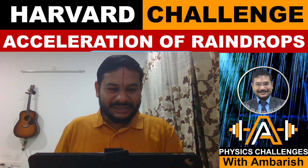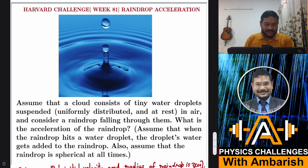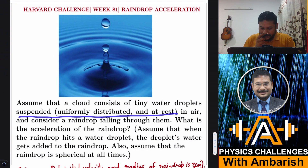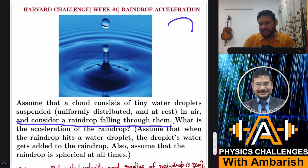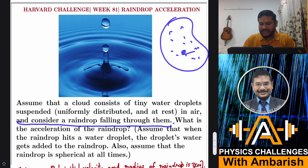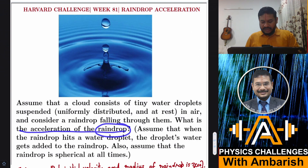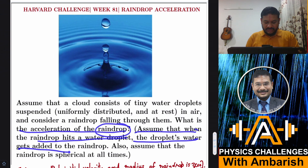Let me get straight into the problem. Assume that a cloud consists of tiny water droplets suspended uniformly, distributed and at rest in air, and consider a raindrop falling through them. There might be some cloud with tiny droplets which fuse together to form a raindrop, and then that raindrop starts falling through the cloud. What is the acceleration of the raindrop? Assume that when the raindrop hits a water droplet, the droplet's water gets added to the raindrop.